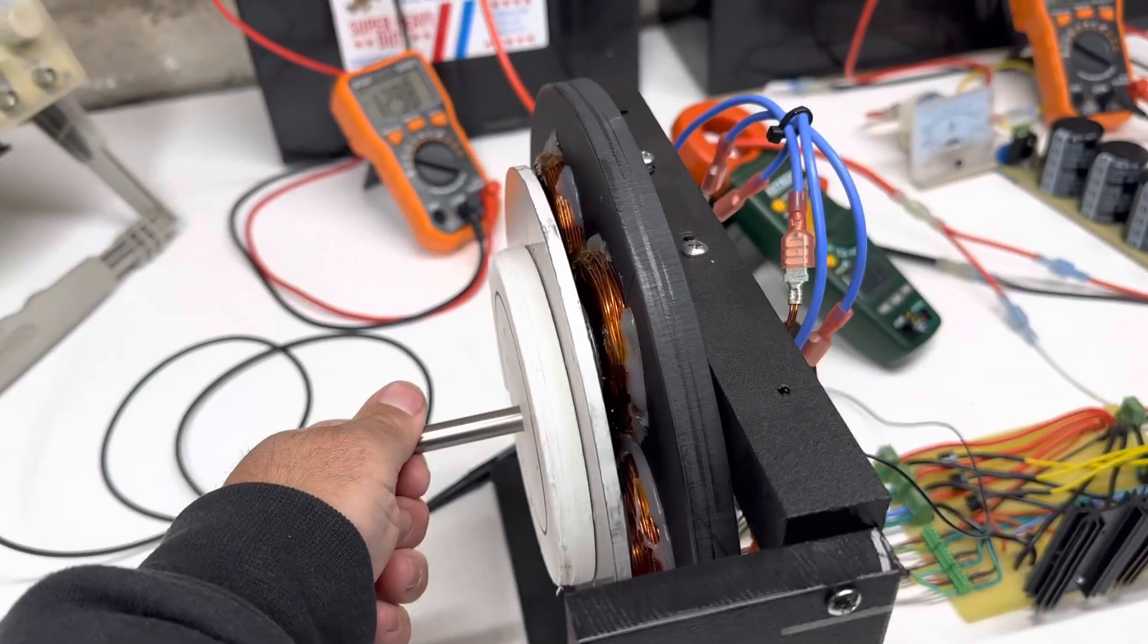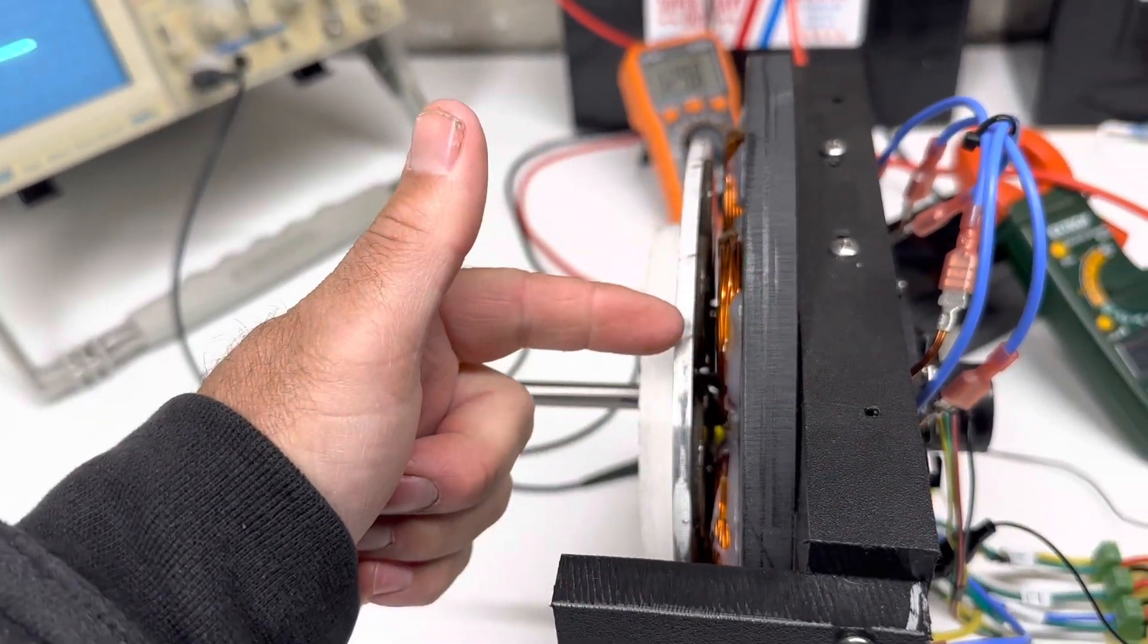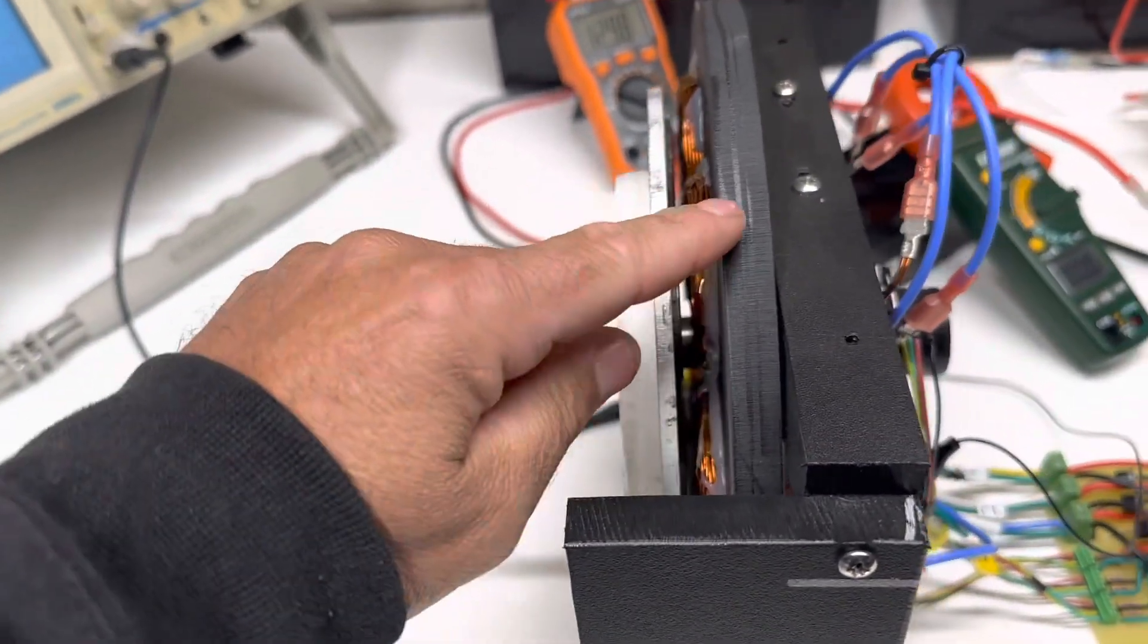So if you see right here, the coils and the magnet are straight across from each other. There are six coils and there's eight magnets.